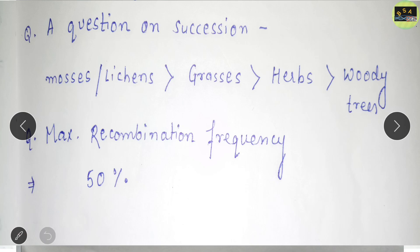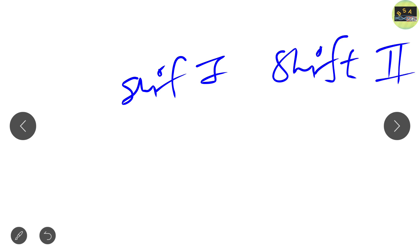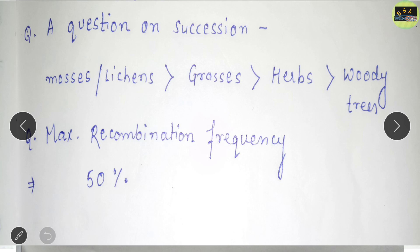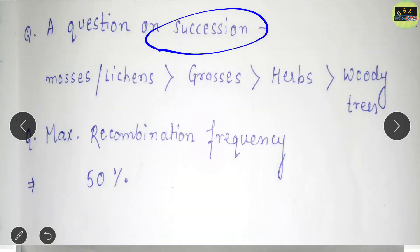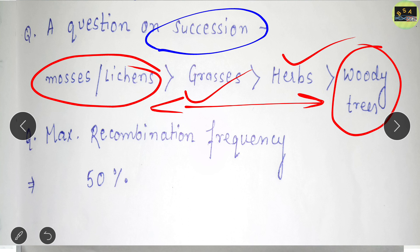The first question we will discuss covers both shifts — morning shift (shift one) and evening shift (shift two). The first question is about ecological succession, where you have to arrange the stages from early to later. The correct order is: mosses and lichens came first, then grasses, then herbs, and finally trees. This is the series of succession — a very simple question asked in the evening shift.